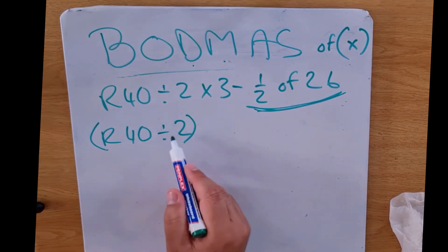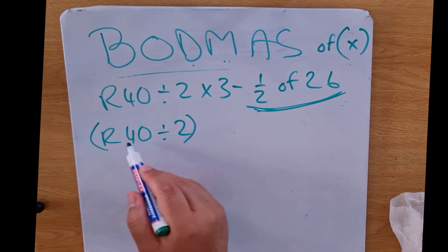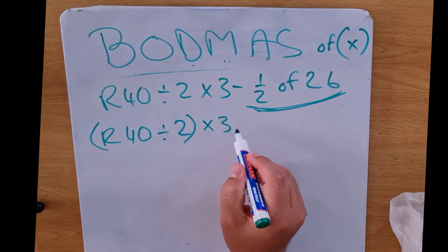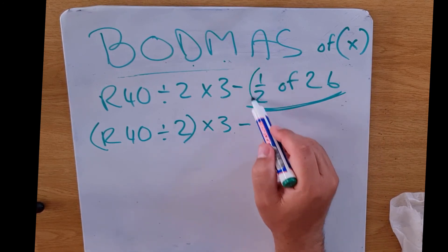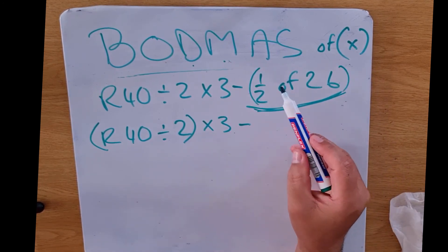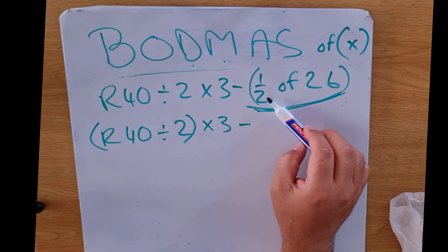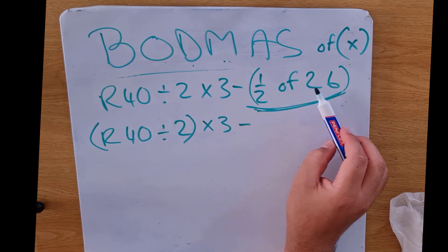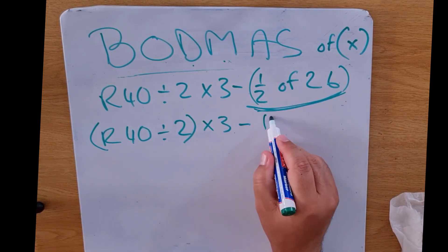That's going to be in one bracket because that's the sum we're going to do there first. Whatever that answer is, we'll multiply it by 3, and we're going to subtract that from, I'm just going to put this in a bracket, again there's our multiplication. So half of 26, that is 13.